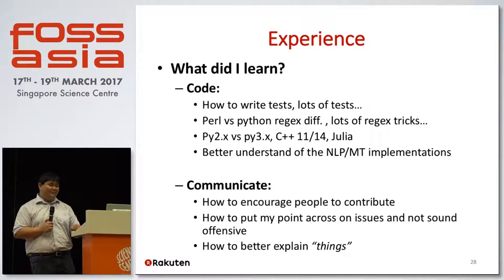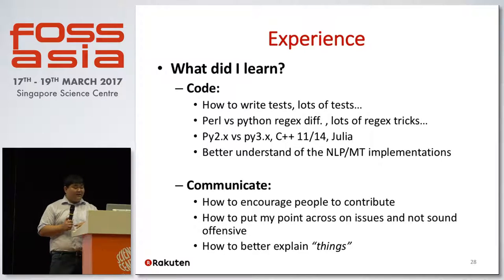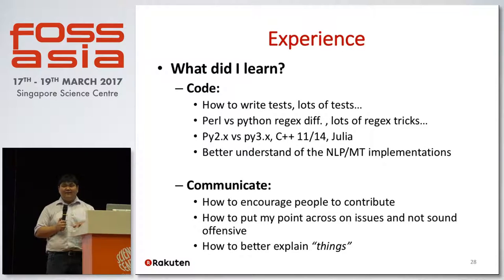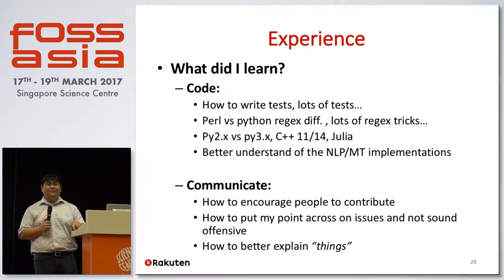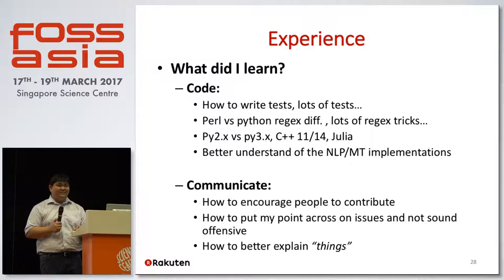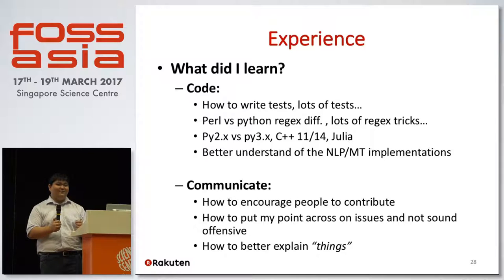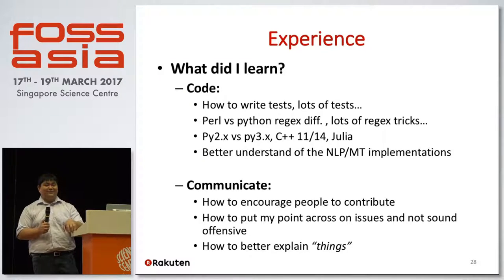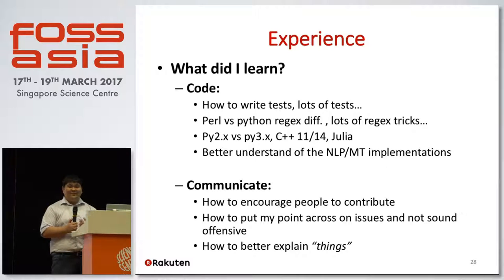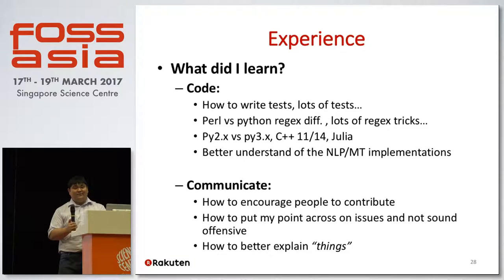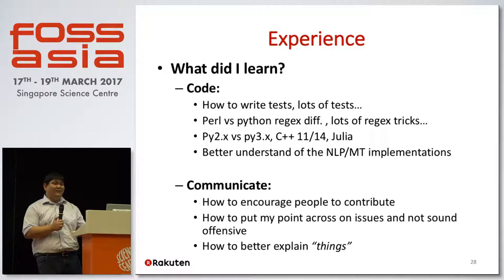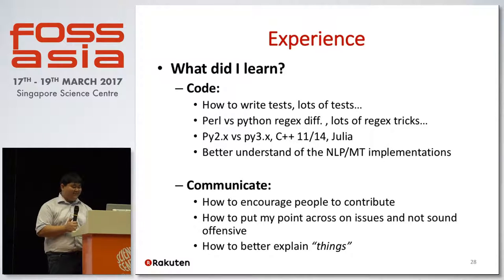What I really learned is two things beyond coding. First, communication — writing a lot of tests is also a form of communication to show that your code works. Second, putting things across without sounding offensive. Online when you type you might write 'I don't like this,' but actually you should say 'this code is doing something and breaks everything' — you have to tone things down, be as neutral as possible, and communicate things clearly, including math formulas.